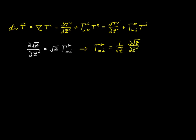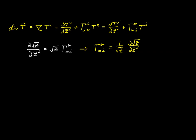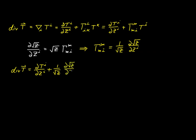Now what I can do is take this expression and substitute it in place of gamma^m_mi. We now have the divergence of our vector t equal to the partial derivative of t^i with respect to z^i, plus 1 over the square root of z times the partial derivative of the square root of z with respect to z^i, times t^i.